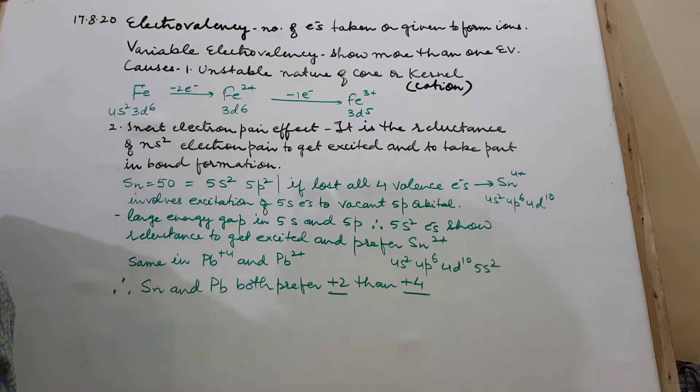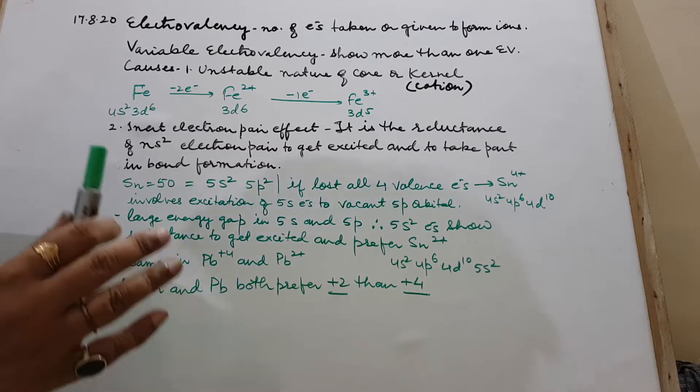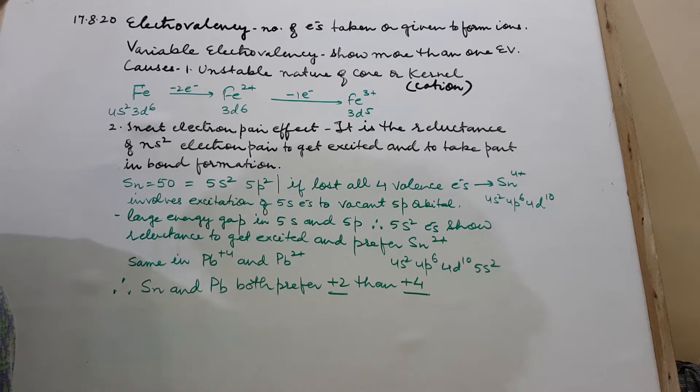In this video, we will study electrovalency. What is electrovalency? It is the number of electrons taken or given by atoms to form ions. Number of electrons given or taken by the atoms to form ions.